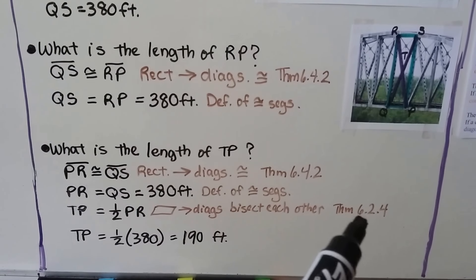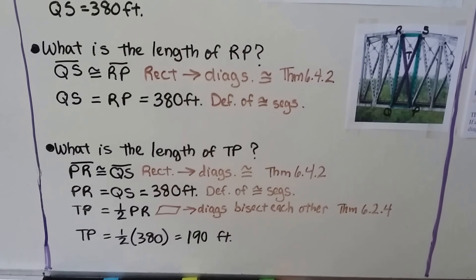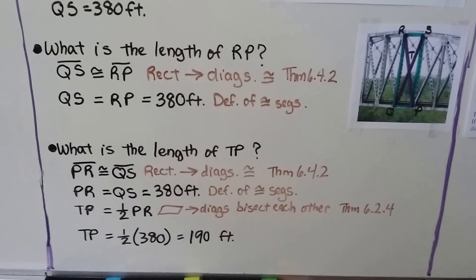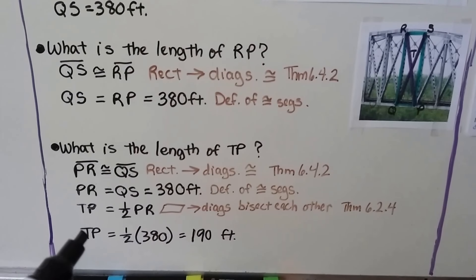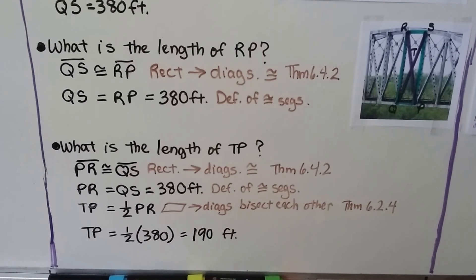And again, that's from our fourth theorem from 6.2. That says if it's a parallelogram, the diagonals bisect each other. So we've got TP is equal to half of 380, which means it's 190 feet.